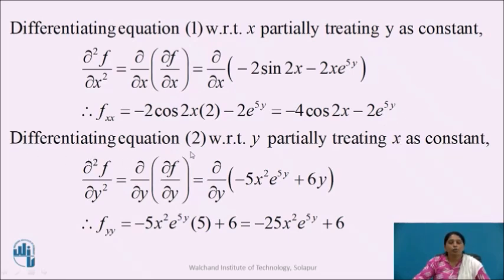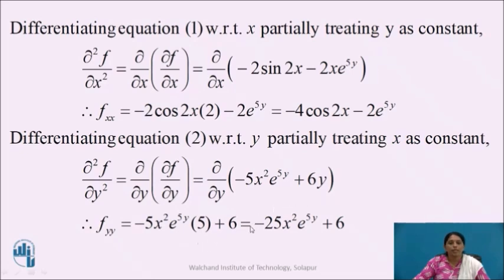Similarly, differentiating equation 2 with respect to y partially, treating x as constant, gives us ∂²f/∂y². So ∂/∂y of (−5x²e^(5y) + 6y): −5x² is treated as constant, and the derivative of e^(5y) is e^(5y) × 5, plus the derivative of 6y is 6. So we get f_yy = −25x²e^(5y) + 6.